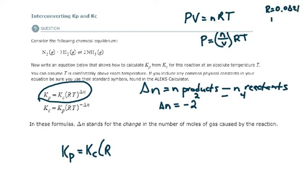times the absolute temperature, that'll be in Kelvin, as an absolute temperature, raised to delta n.